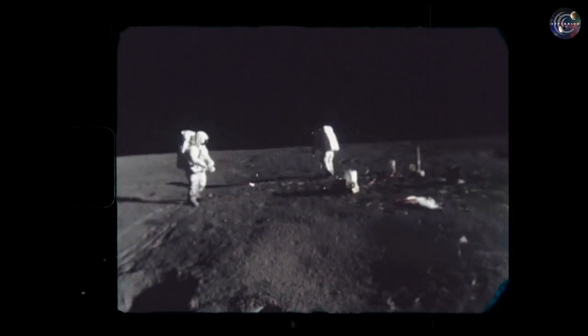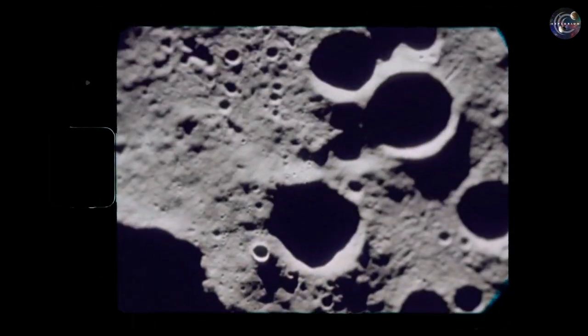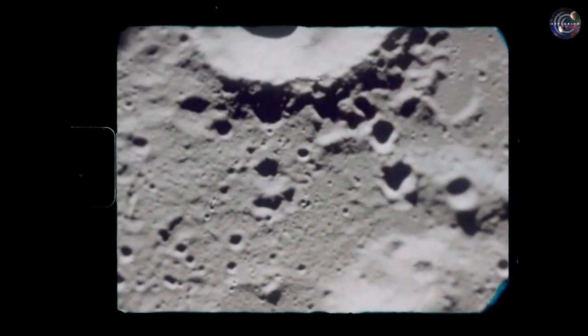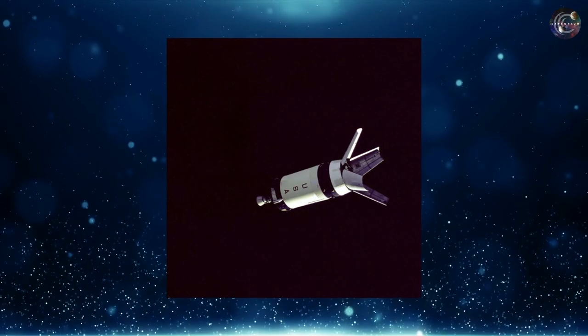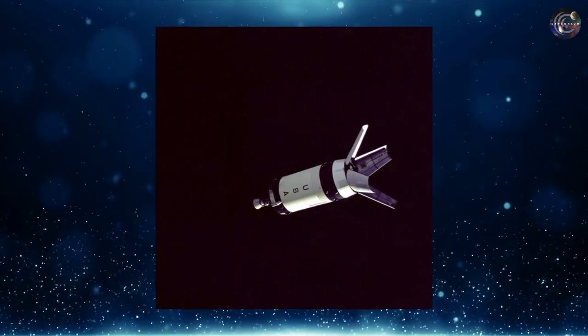NASA wanted to deploy it in orbit around the Sun, where it would remain for thousands of years and would not interfere with any future missions. However, things didn't go as per their plan for Apollo 12.